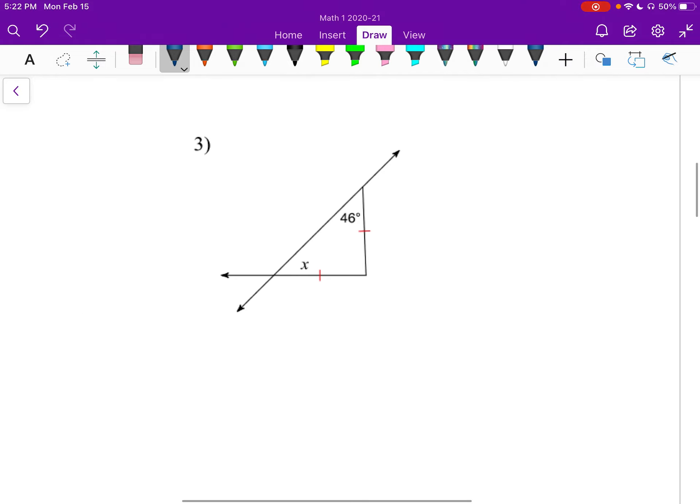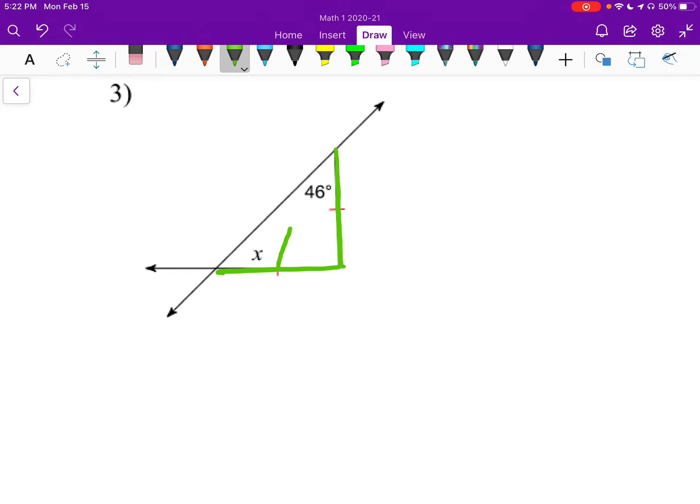Number three. Here again, we have an isosceles triangle. Here's our equal side, and here's our equal side. Just like before, we need to figure out which two angles are going to be congruent. Well, they're going to be the ones that are opposite the side. So this angle, that 46-degree angle, is going to be congruent to this one, the x. So this one's really easy. We just know that x is 46 right away.